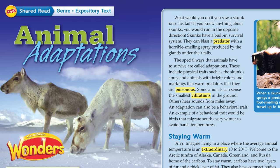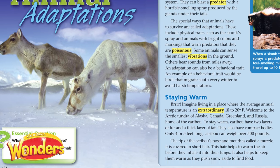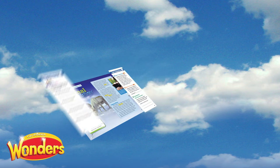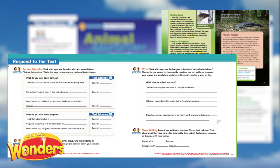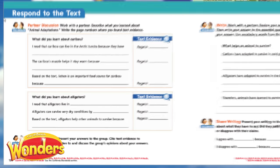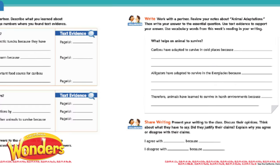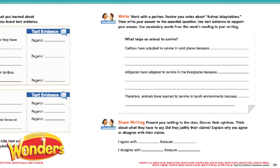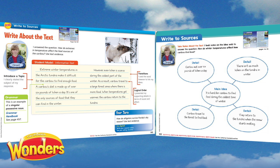Next we intentionally expose English learners to on-level complex text with targeted scaffolding. Students work in pairs to annotate and respond to the text, working collaboratively, discussing, and justifying their opinions. As we move through this week of instruction, you'll find scaffolded support for writing to sources.